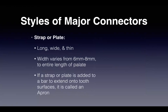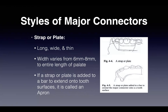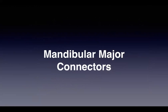Opposite to bars, straps or plates are long, wide, and thin. Width varies from 6 to 8 millimeters up to the entire length of the palate. If a strap or plate is added to a bar extending onto two surfaces, it is called an apron. Figure 4.4 illustrates a strap or plate with a 6-millimeter window from the marginal gingiva, while Figure 4.5 shows an apron sitting against the cingulum of the teeth.